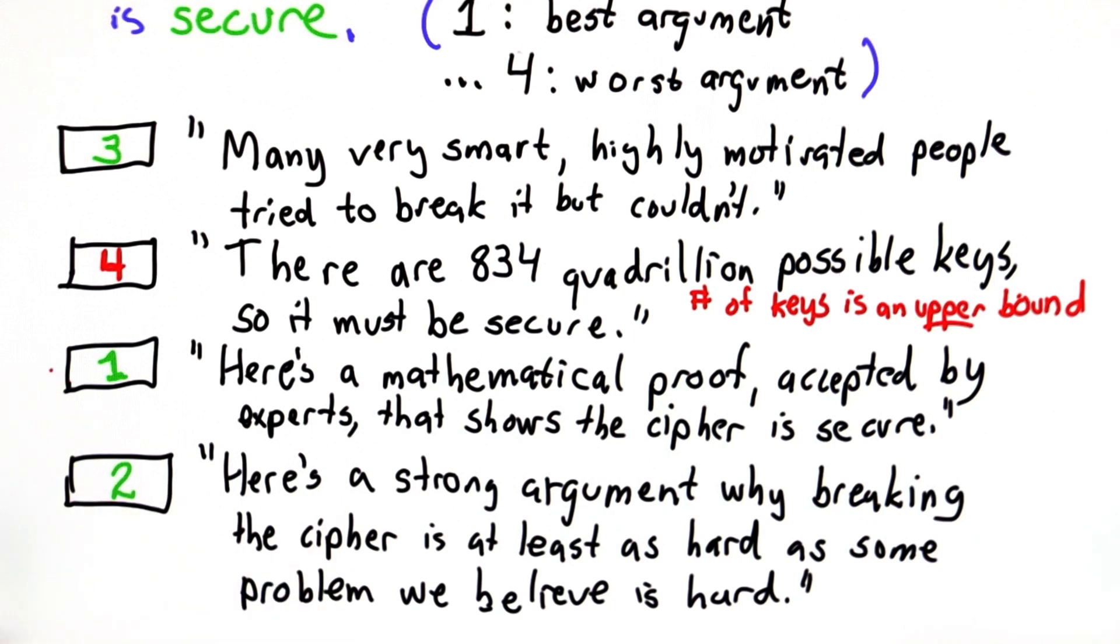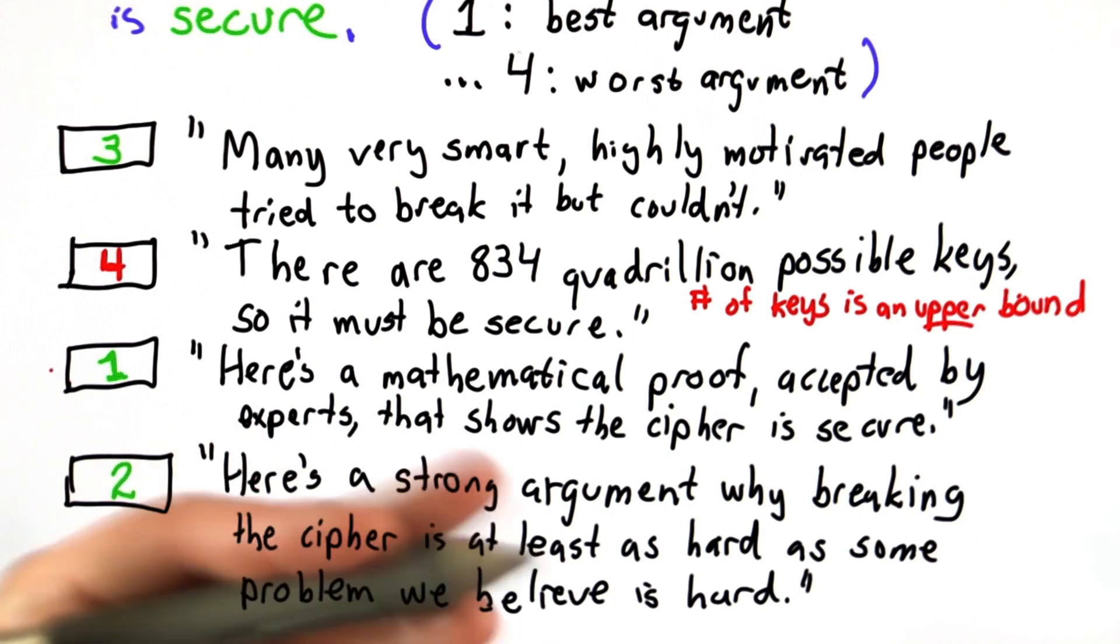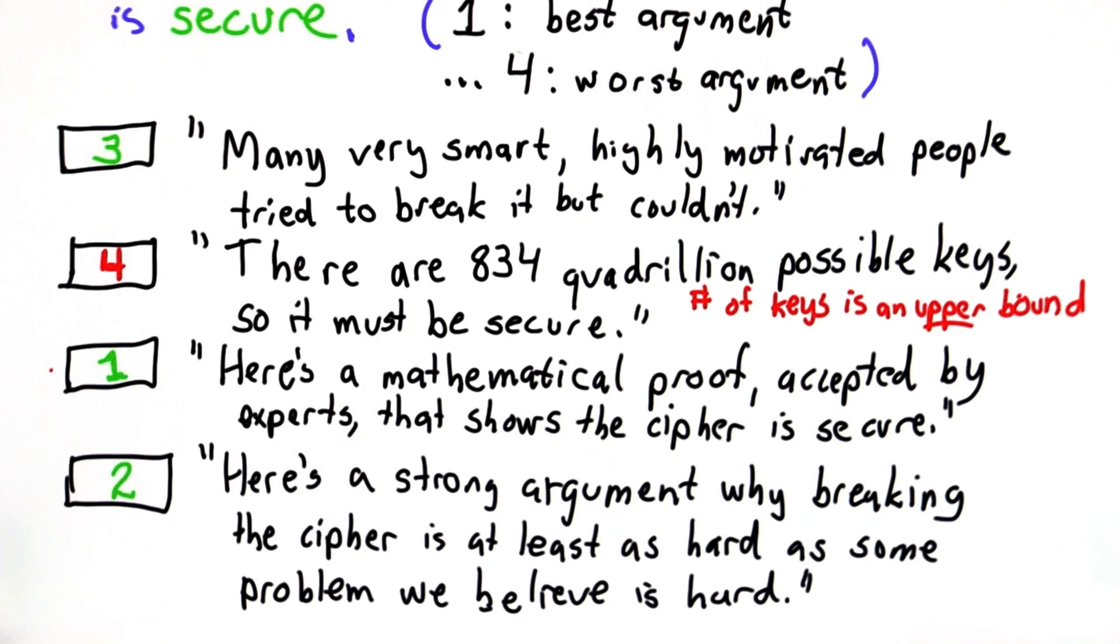That's not true for the one-time pad as we saw. Trying keys gives you perfectly sensible messages—you'll eventually see all possible messages, so you can't know which key is correct.